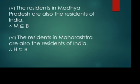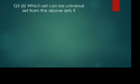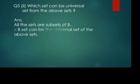The next part of this question asks: which set from the above can be the universal set? As you know, universal set means the set which contains all the other sets under consideration. So which would be the universal set? India, because India contains all the others as subsets. So B can be the universal set of the above sets.